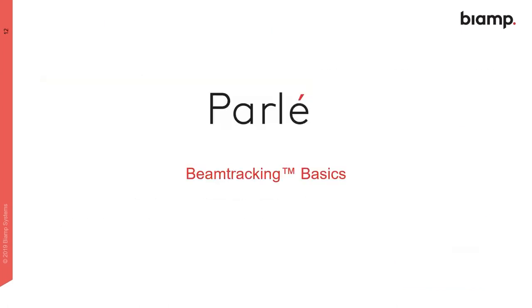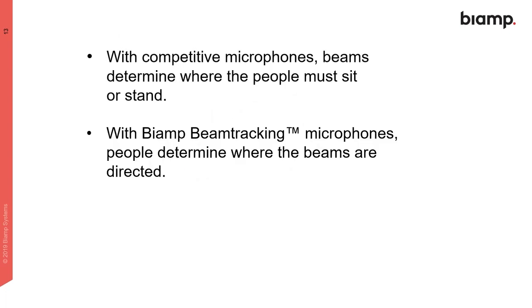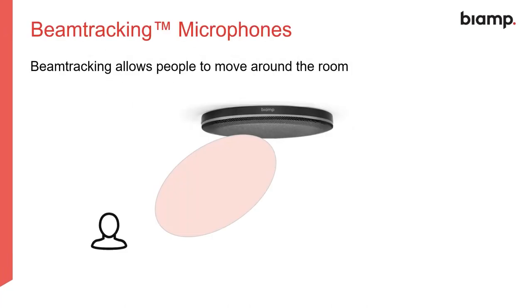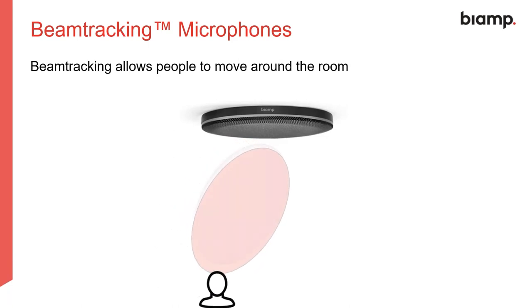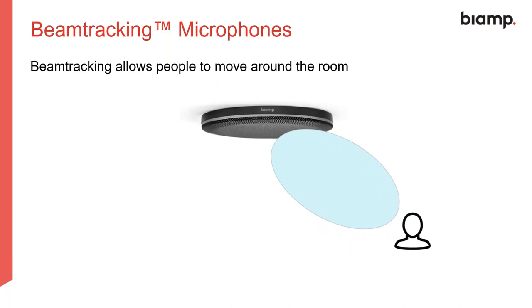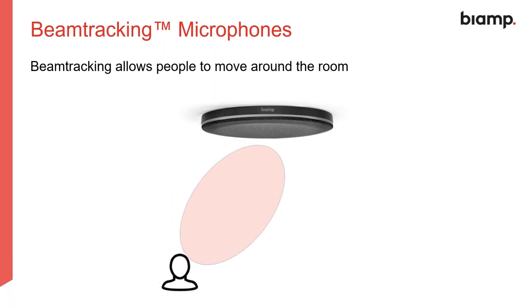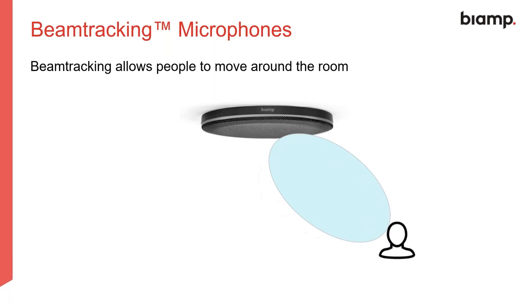Looking at beam tracking basics: Biome beam tracking microphones don't require people to sit still or have fixed seating positions — the microphone tracks you around the room. As a person moves, the microphone uses its internal capsules across multiple zones to mix polar patterns and track the person while walking. The TCMX example shows four zones, and the graphic demonstrates how the microphone changes zones and tracks movement dynamically.